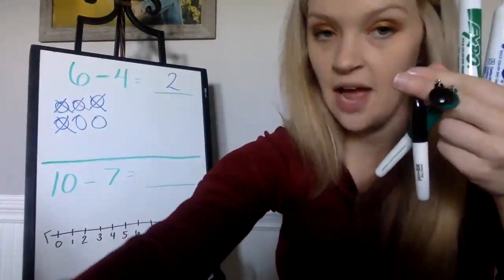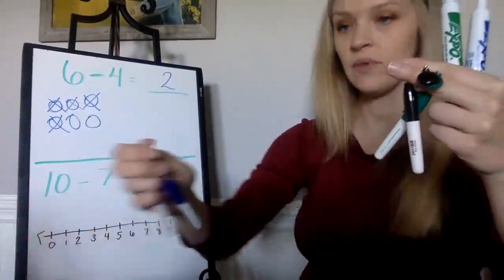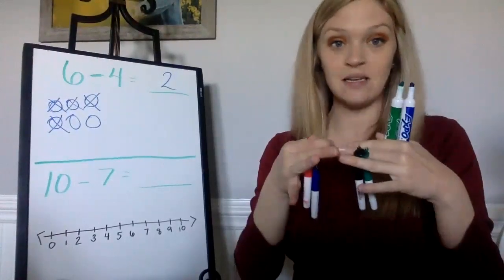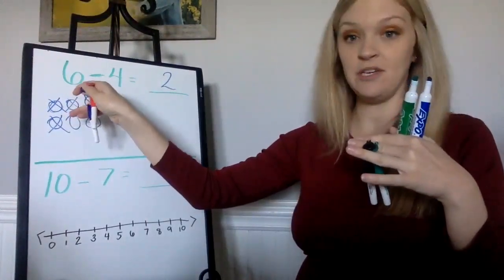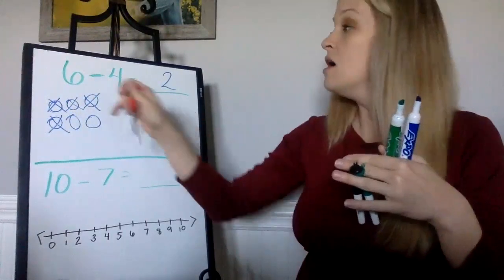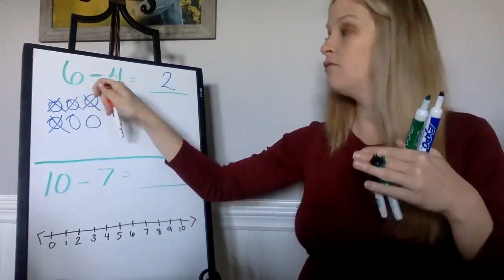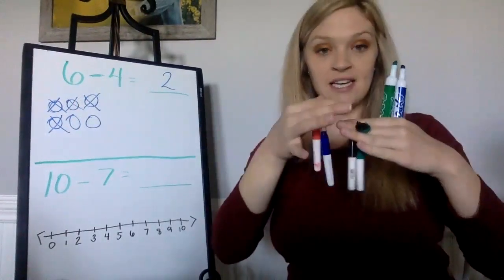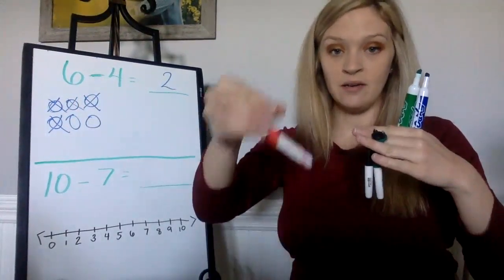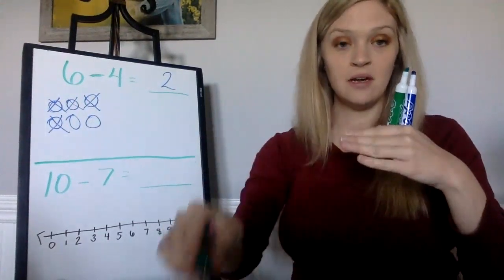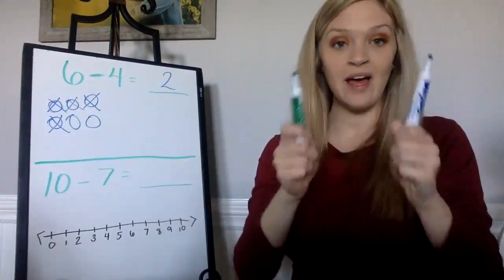...these little guys, okay? I have six markers here. I'm starting with six just like my equation tells me. Six minus or take away four. So I've got six, now I'm going to take away four of them: one, two, three, four. How many markers do I have left? Two.